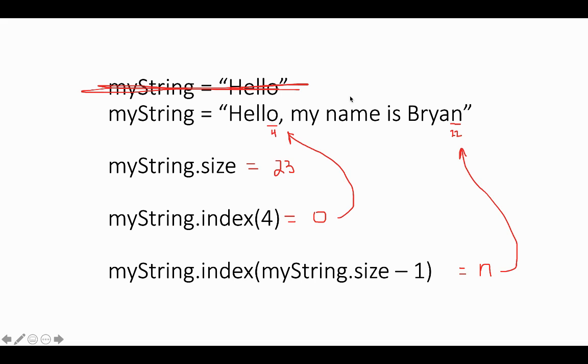But let's say that I switched it up on you. I crossed out myString - it was hello, it's no longer equals to hello, it equals 'Hello, my name is Bryan.' Okay, so if you tried to say myString index at 4, it would give you the fourth index which isn't O, but we didn't want that, we wanted the N at index 22.